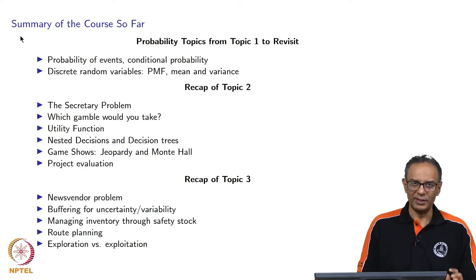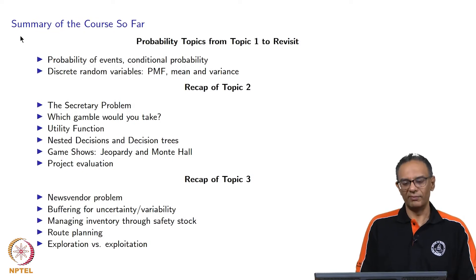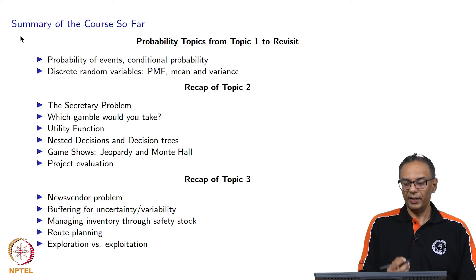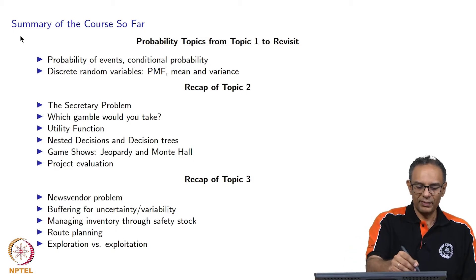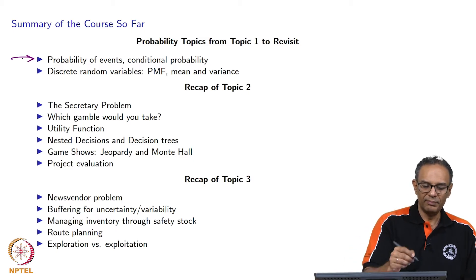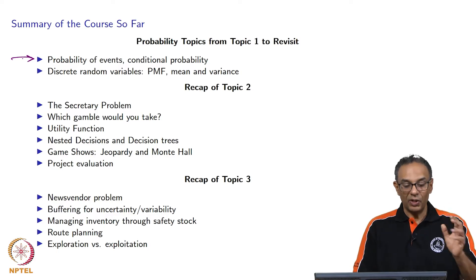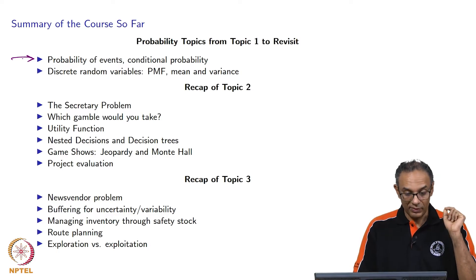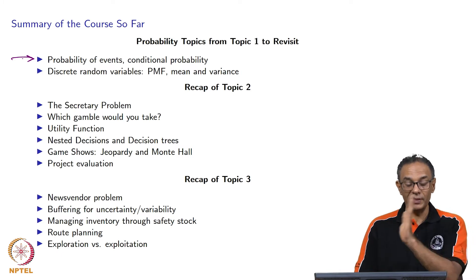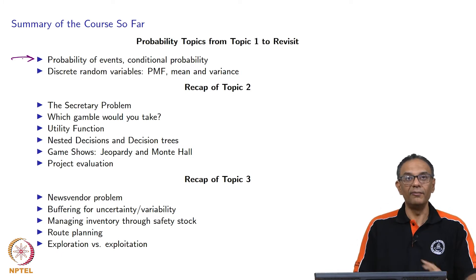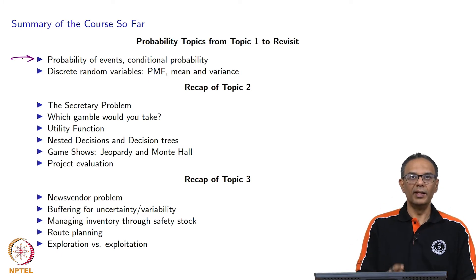Before we do that, I want to summarize the course that we have seen so far. We started by talking about various probability topics, and for this topic, here are the items that are going to be important. We have to again go back to the probability of events. We will heavily emphasize conditional probability, especially towards the second half. We will also talk a little bit about discrete random variables.